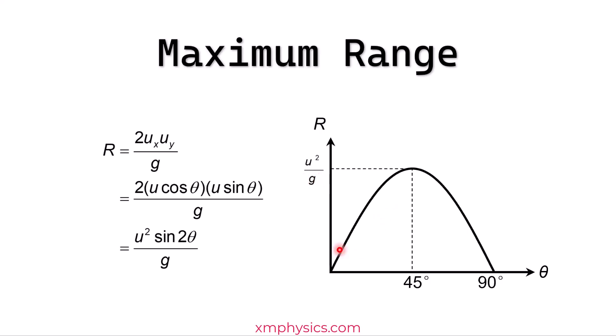Now notice also the sine 2 theta is symmetrical about 45 degrees. So that will predict for us that if you launch something at 10 degrees and if you launch it at 80 degrees, you get the same range. They'll land at the same spot.